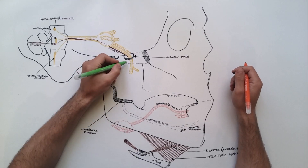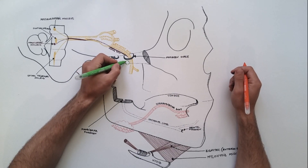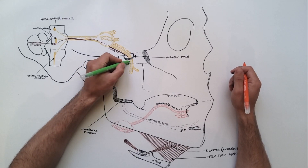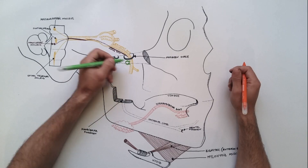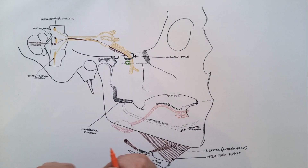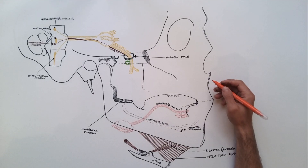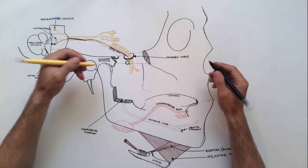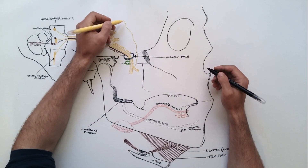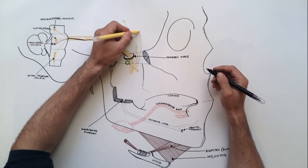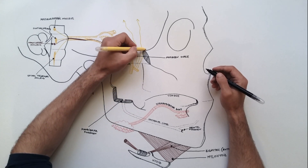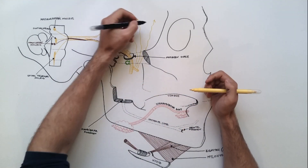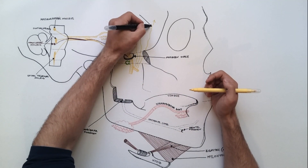Outside the skull, medially to the mandibular nerve, the otic ganglion is located. I have indicated the otic ganglion using the green color. I have already mentioned that the mandibular nerve will split into two divisions — an anterior division and a posterior division. Now let's discuss the branches from each of these divisions.